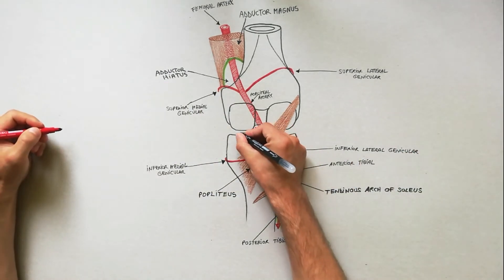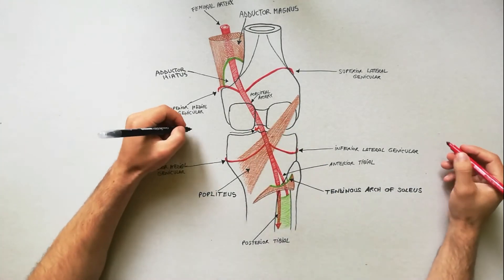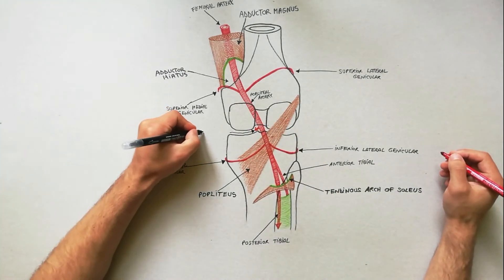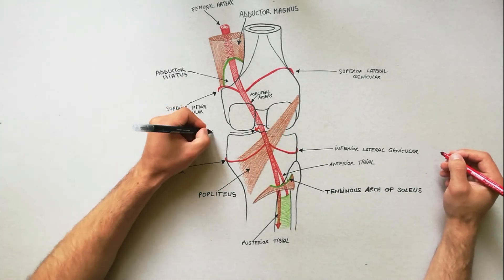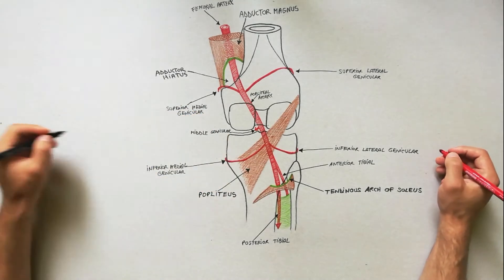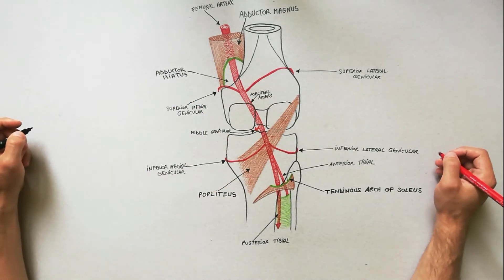The middle genicular artery pierces the oblique popliteal ligament of the knee to supply the cruciate ligaments and synovial membrane of the knee joint.